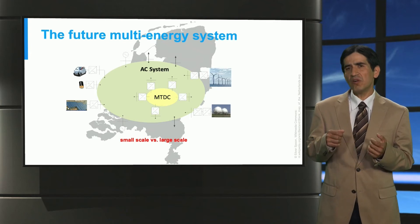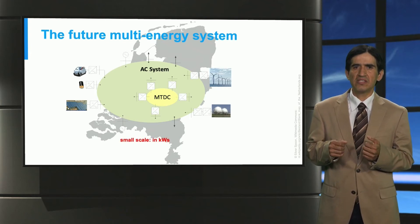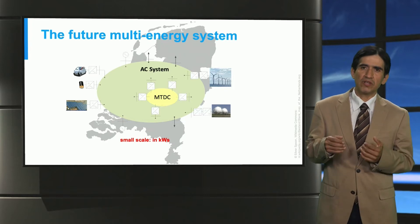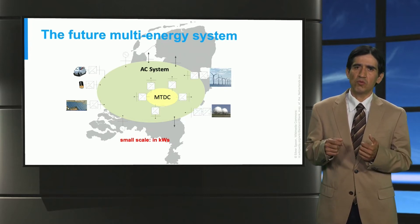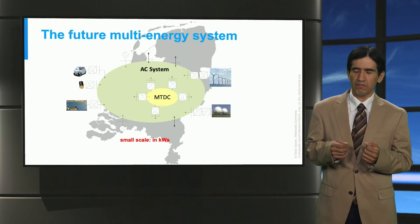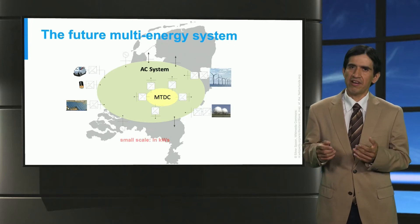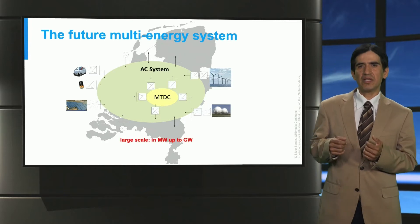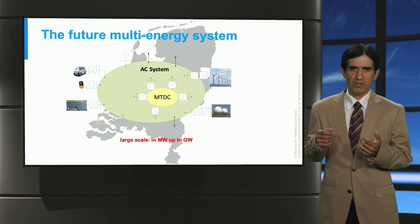Small scale, for example, is like distribution systems. Microgrids are usually metered in kilowatts up to one megawatt. Large scale, on the other hand, is typically metered from megawatt up to gigawatt.